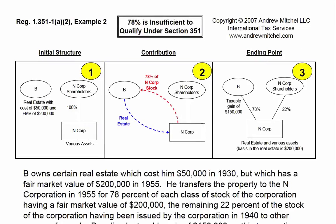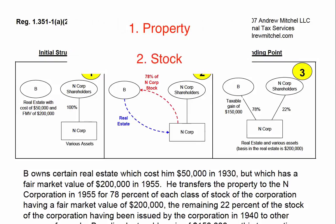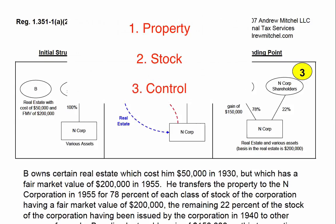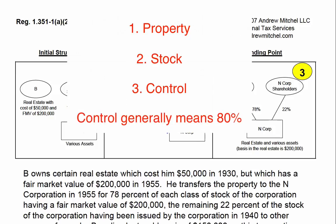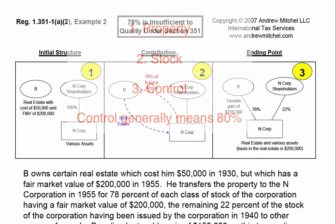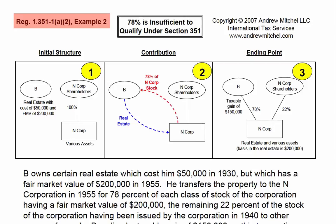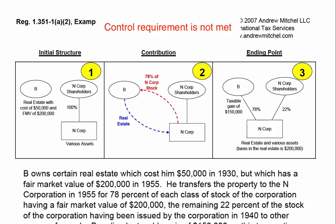In prior videos, we have discussed the three primary requirements of a Section 351 exchange. First, there must be a transfer of property. Second, it must be an exchange for stock. And third, the transferor or transferors must control the corporation immediately after the exchange — control generally means 80%. Example 2 of Regulation 1.351-1A2 is a situation where the control requirement is not met.